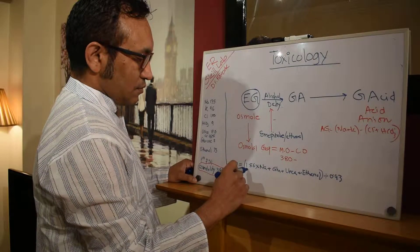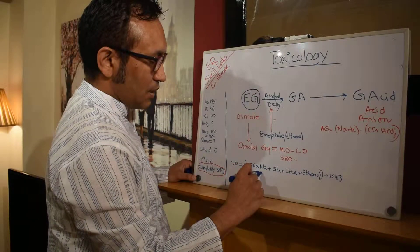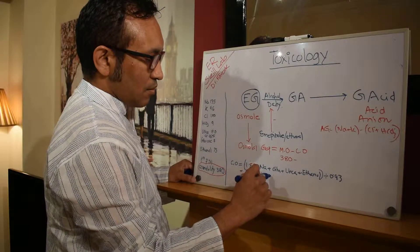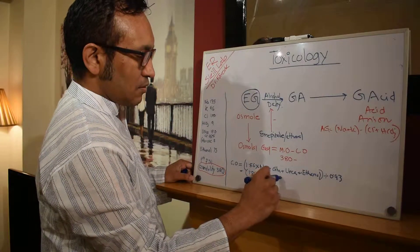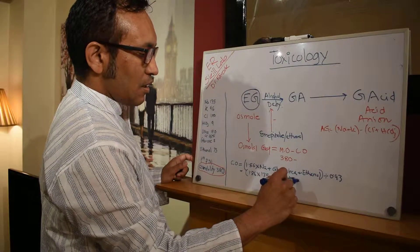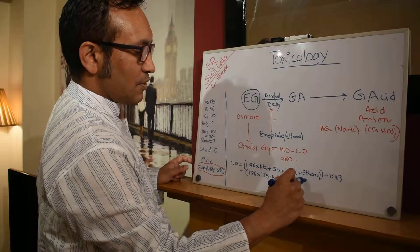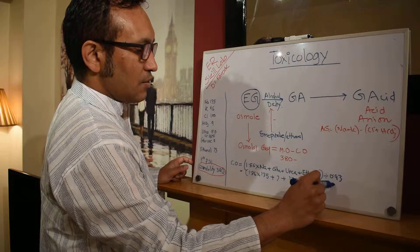Let's plug in some values. So 1.86 times sodium is 135, glucose is 7, plus urea 17 and ethanol is 75, divided by 0.93.